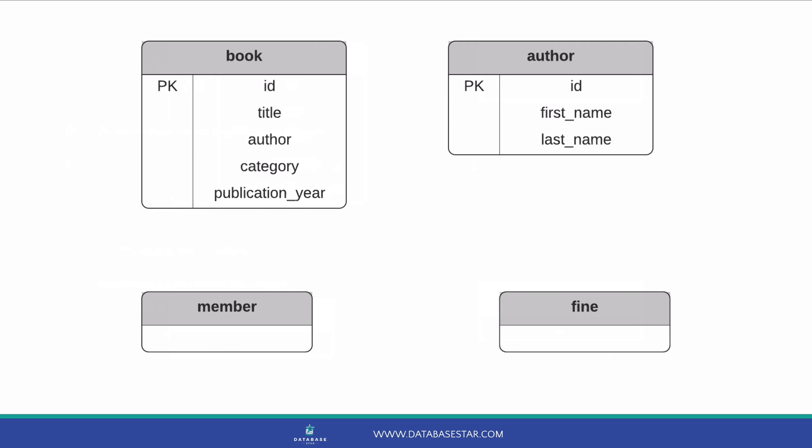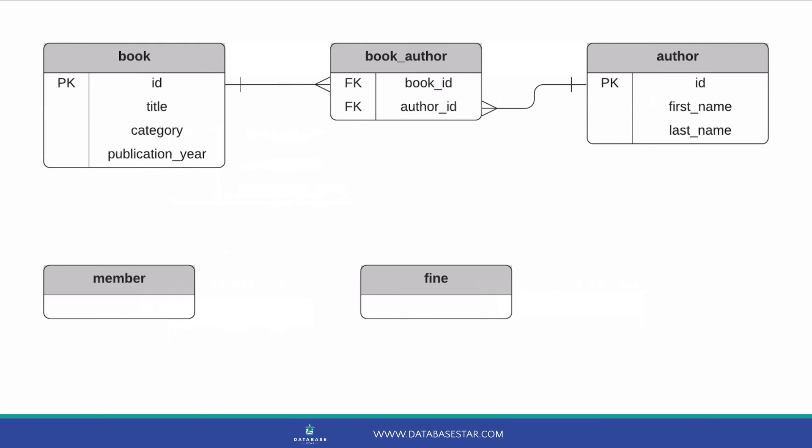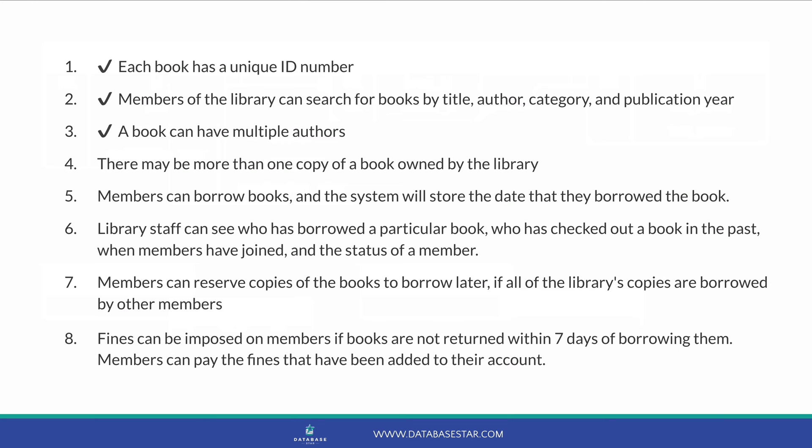So how do we relate the author table to the book table? We know that a book can have many authors, and an author can also write many books. This is called a many-to-many relationship. For our design, it means we need a joining table in the middle that stores the combinations of books and authors. Here's our design with the joining table — we have a table called book_author, with the primary key of the book and the author table stored as foreign keys. We've now achieved the first three requirements.